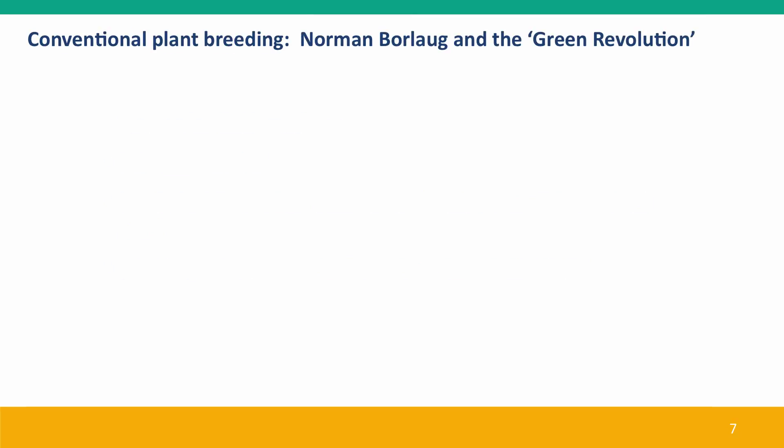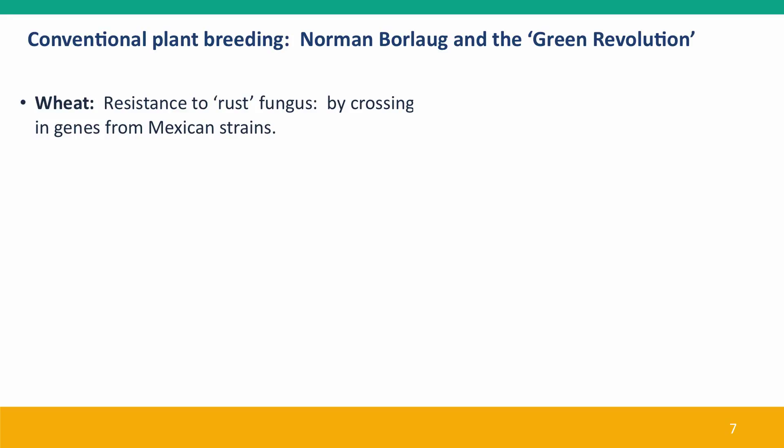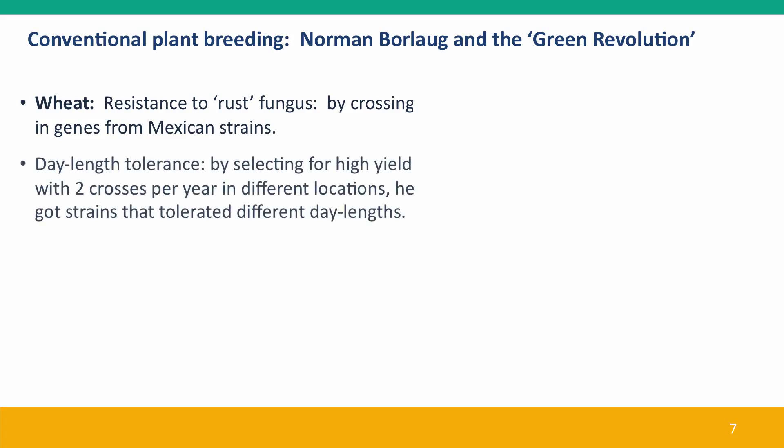I'll discuss one example: the Green Revolution brought about by Norman Borlaug's breeding of wheat. He set out to create strains of wheat resistant to a rust fungus by crossing in genes from Mexican strains — taking the high-yielding North American strains from Canada and the US and crossing in alleles from Mexican strains that conferred rust resistance. He also selected for day length tolerance, because wheat grown in Canada and the US could only produce one crop a year and was very sensitive to day length — that's how many plants decide when to undergo meiosis and produce seeds. He selected for plants that tolerated wide variation in day length by growing them both in Mexico and Hawaii, getting strains that could grow all over the world.